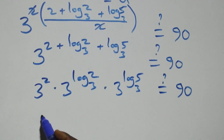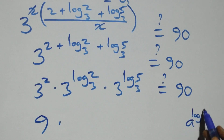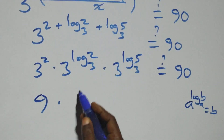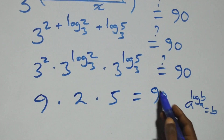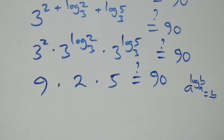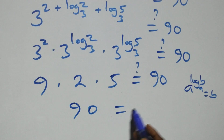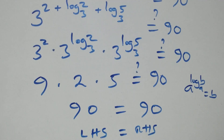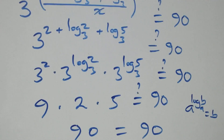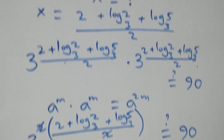We apply the identity: a raised to power log b base a equals b. So 3 raised to power log 2 base 3 equals 2, and 3 raised to power log 5 base 3 equals 5. This gives 9 times 2 times 5 equals 90, which simplifies to 90 equals 90. Left hand side equals right hand side.